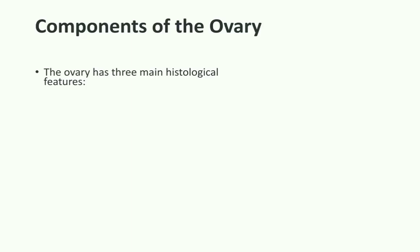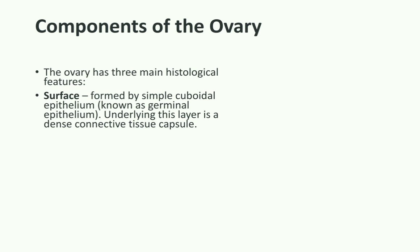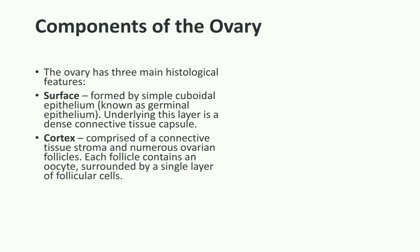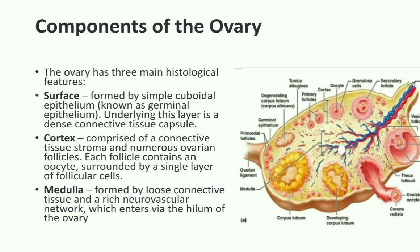The ovarian structure is mainly divided into two parts: cortex and medulla. The surface is formed by simple cuboidal epithelium. The cortex is the outer layer which contains the developing follicles in different stages. It is a compact cellular layer with two parts: an outer fibrous layer called the tunica albuginea, and below it the germinal epithelium layer.